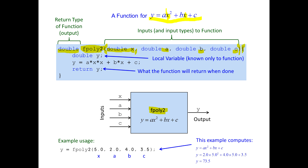The curly braces include all the statements that are going to be part of the function. Inside we can have local variables — in this case a variable called y. Here we compute the quadratic: a times x times x, which is the ax squared part; we add b times x, then add c, and store this in local variable y. When we're done, we return that variable using the return keyword, and it's going to be returned as a double.